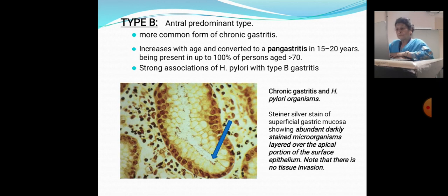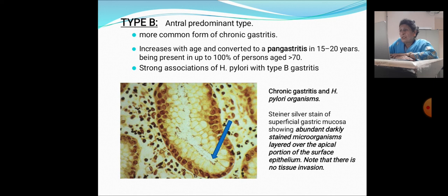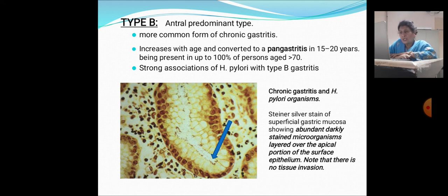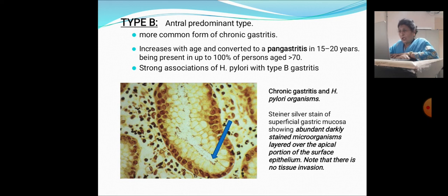Type B gastritis is the antral-predominant form and is the more common form of gastritis. It increases with age and can convert to pangastritis over 15 to 20 years, being present in up to 10% of persons aged more than 70. There is a strong association between H. pylori and type B gastritis. Histologically, with senior silver stain of superficial gastric mucosa, abundant dark-staining microorganisms can be seen overlying the epithelial surface with no tissue invasion.